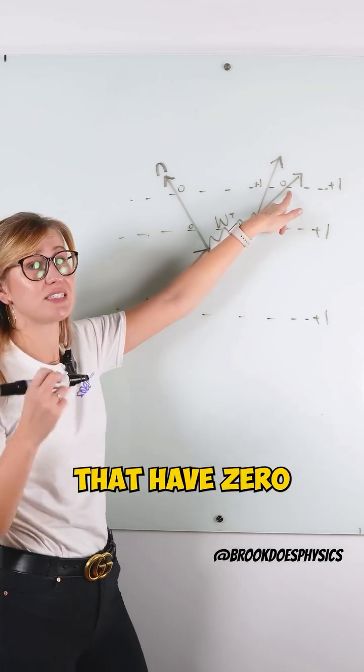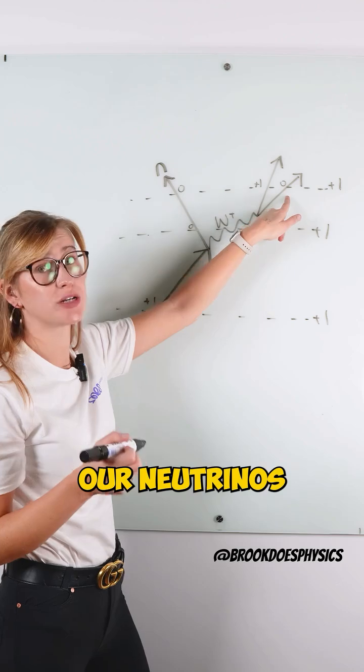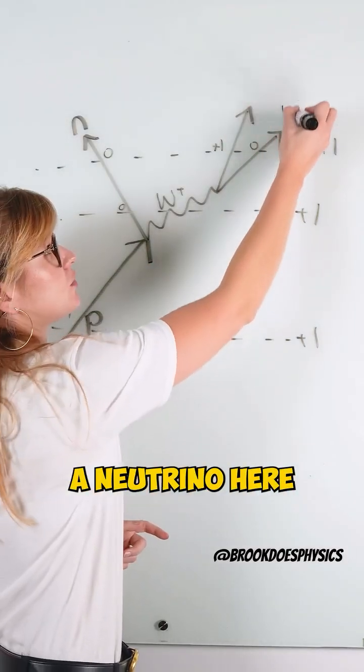So we know the only things that have zero charge are either our neutrons, we've already got a neutron, and our neutrinos. So it has to be a neutrino here.